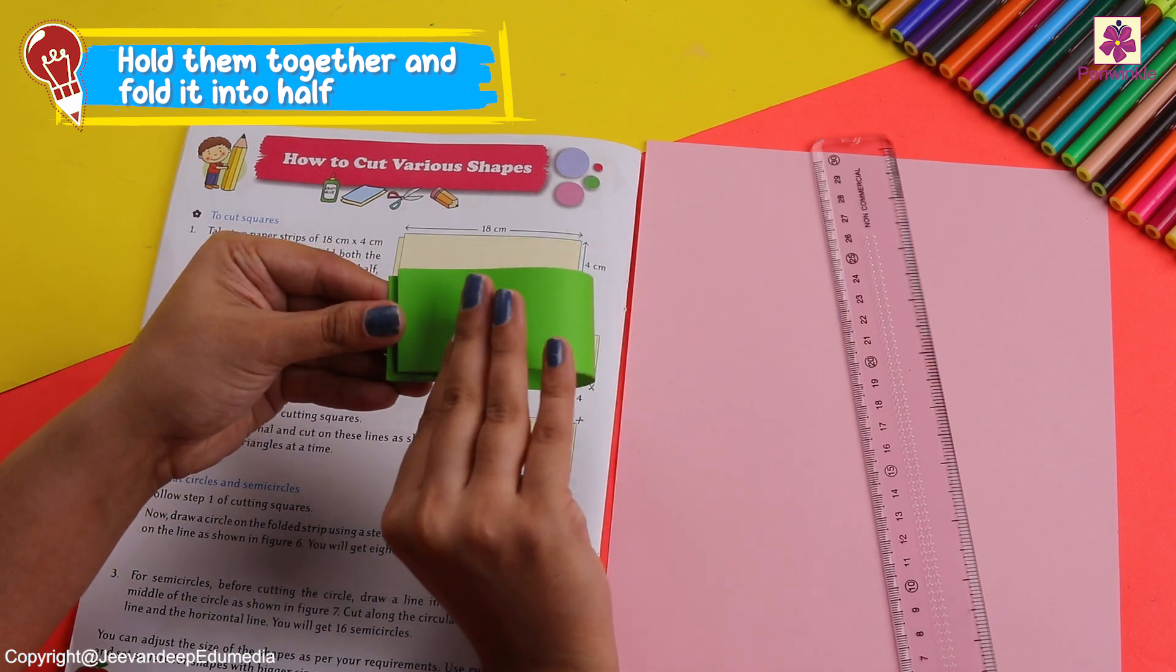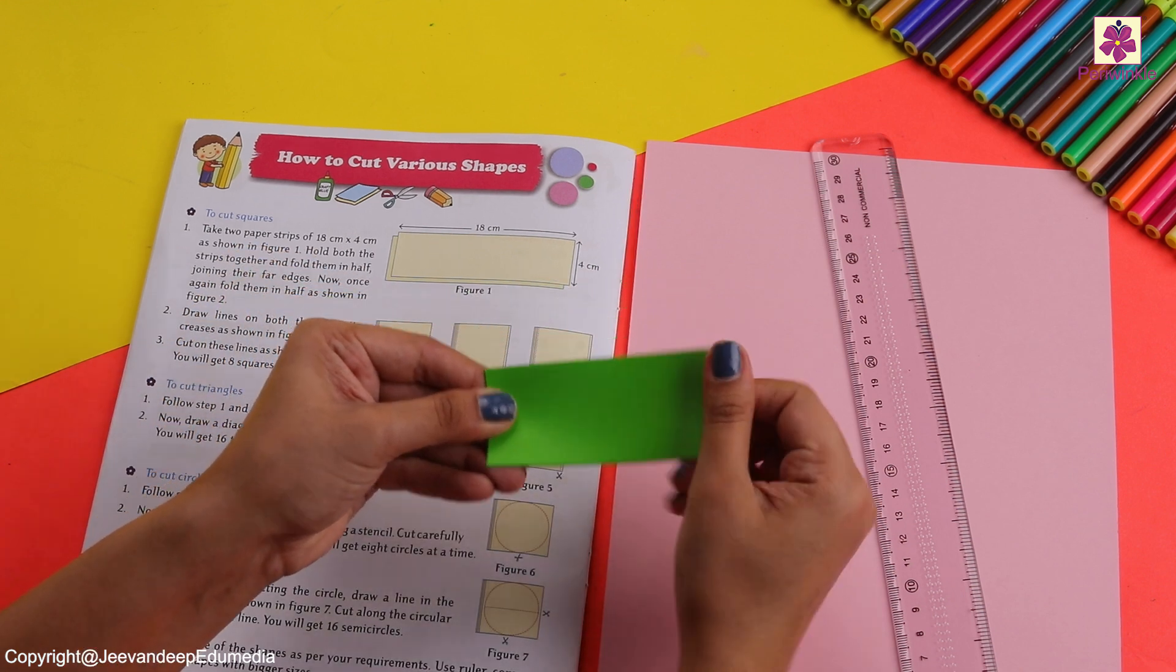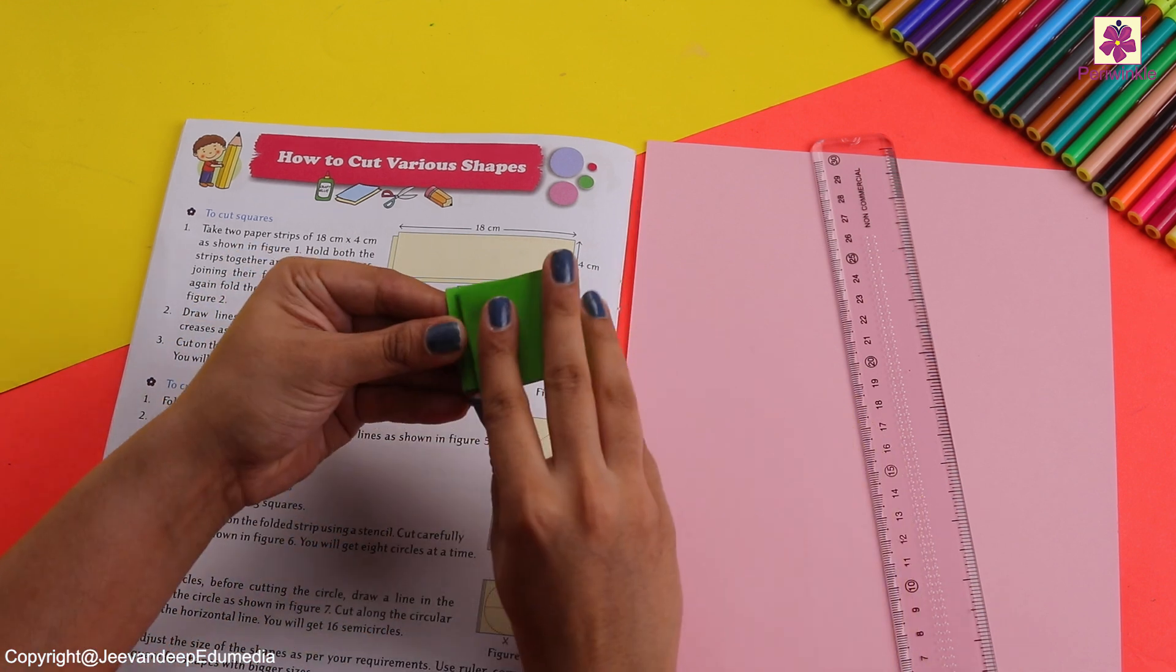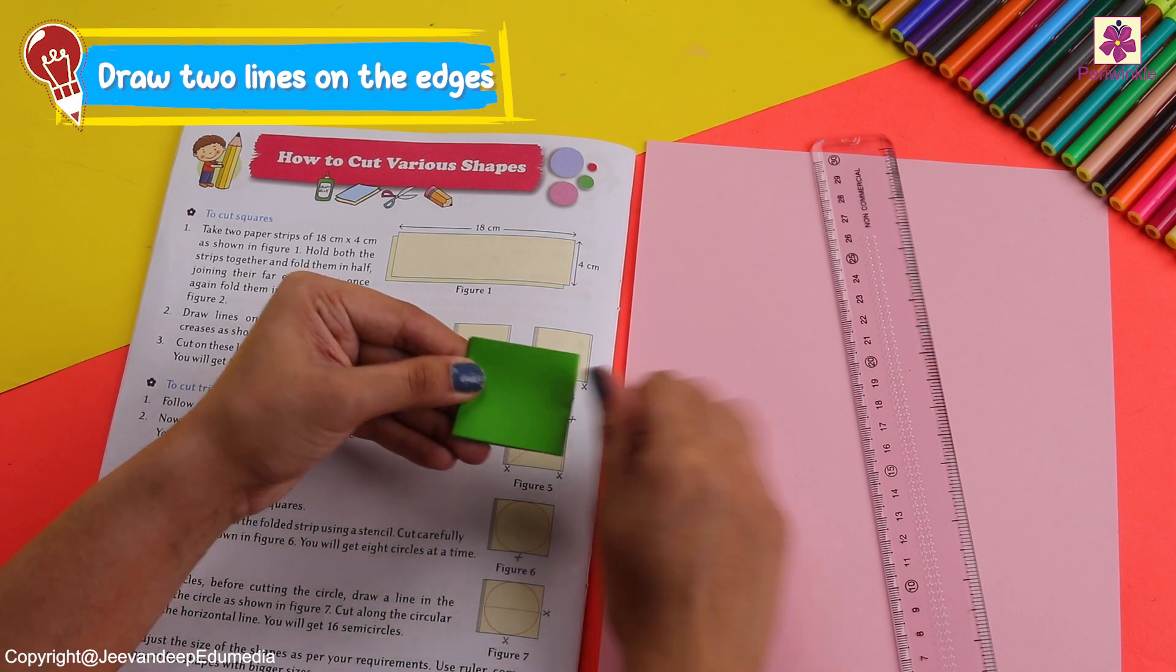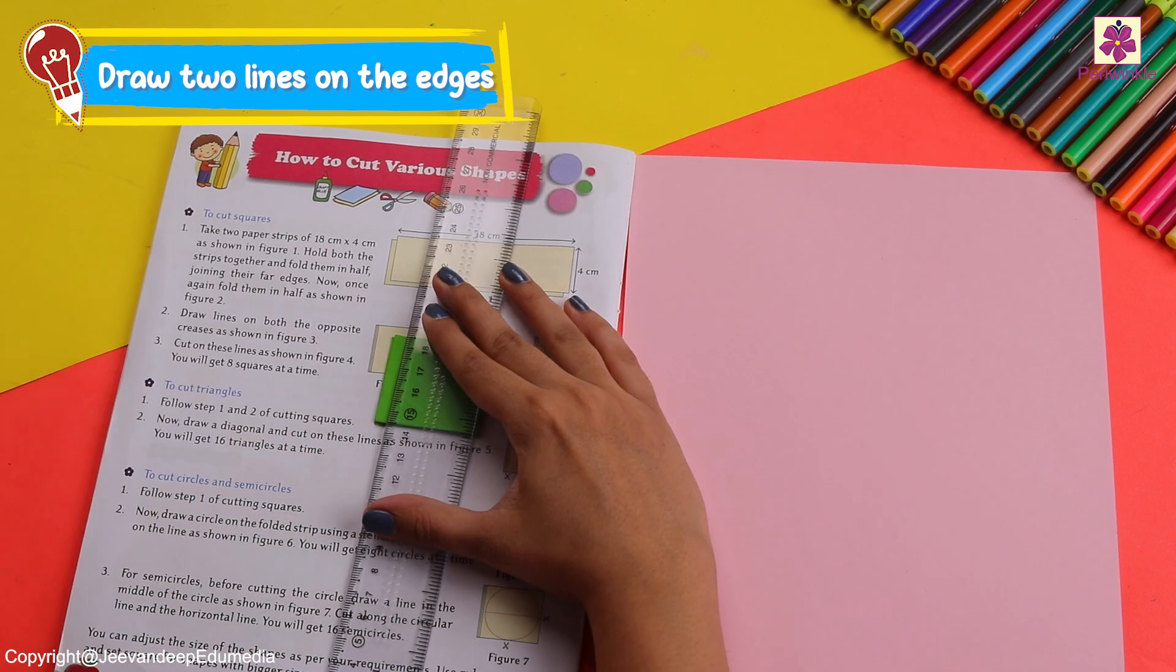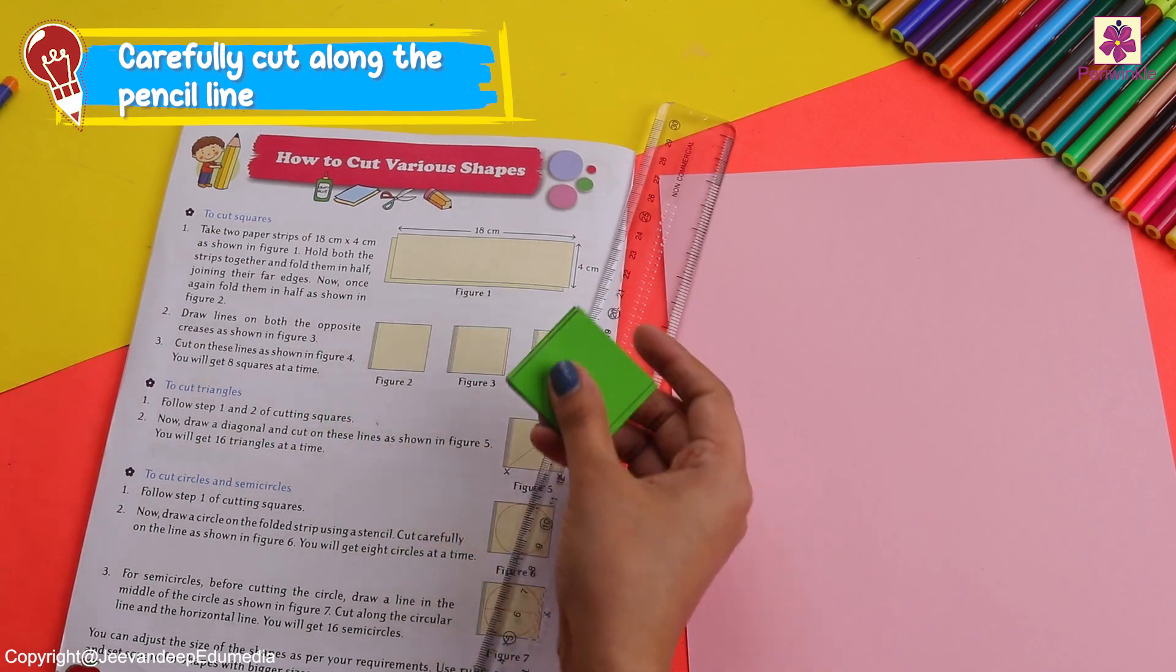Let's keep two of them one on top of another and fold it into half. Let's fold it one more time and then start by making two standing lines on the two edges. After that, let's cut this together.